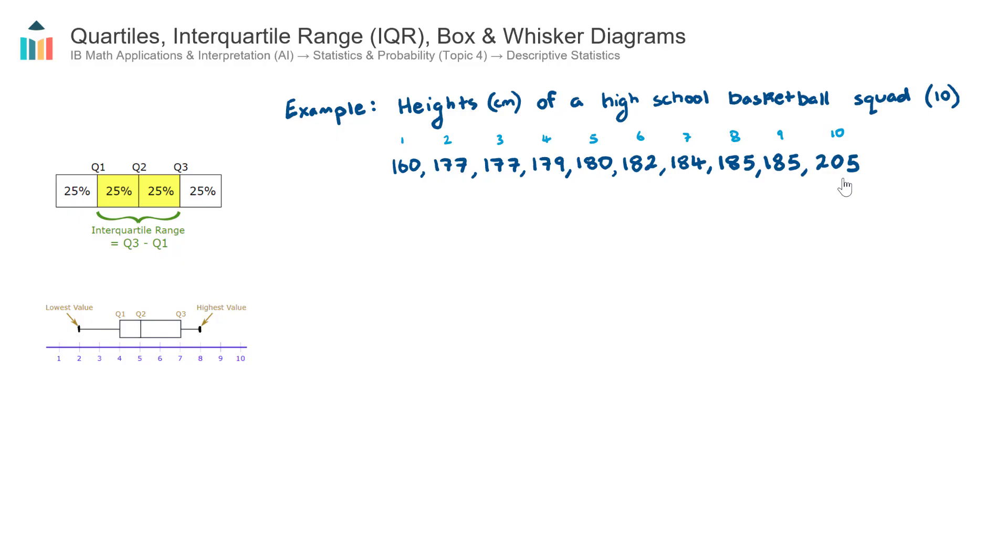So if I was to pose the question to you, what is the range of heights of this 10 person basketball squad? Well, you could tell me the range is the maximum height subtract the minimum height. So 205 centimeters subtract 160 centimeters, that would be 45 centimeters. So the range of heights of this squad was 45 centimeters, which is quite a large range.